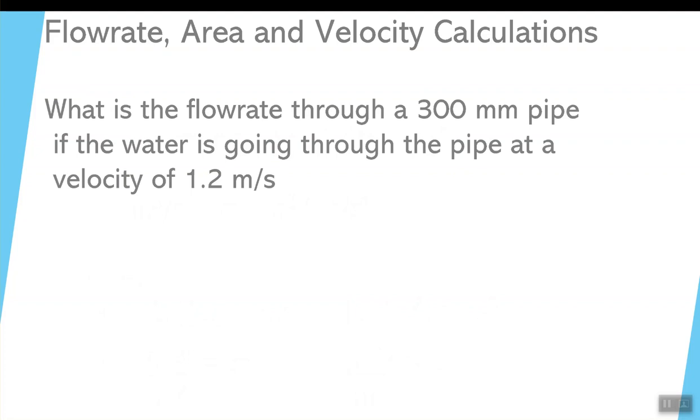Now, getting into the actual sample problem. What's the flow rate through a 300 millimeter pipe if the fluid or the water is going through the pipe at a velocity of 1.2 meters per second?